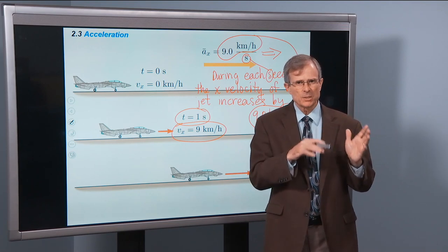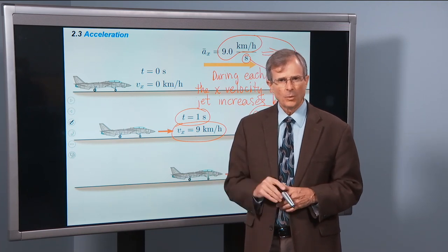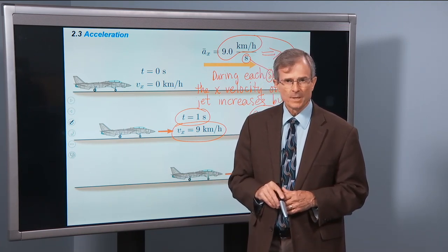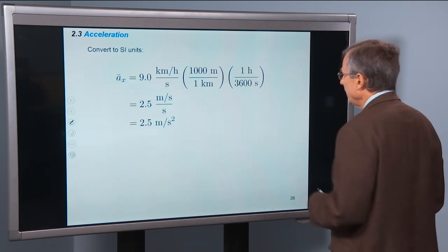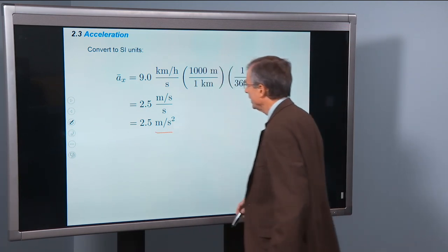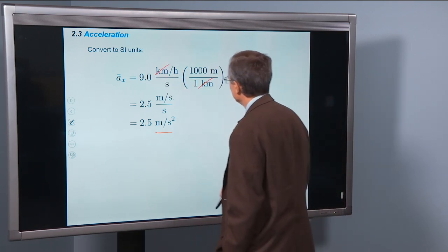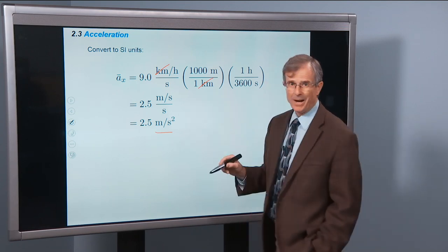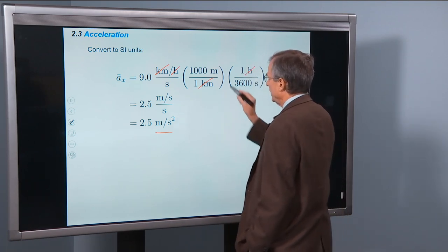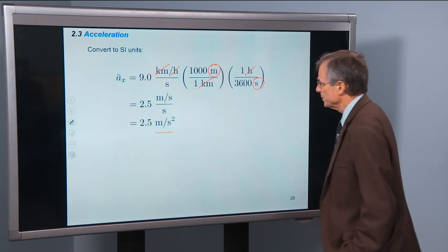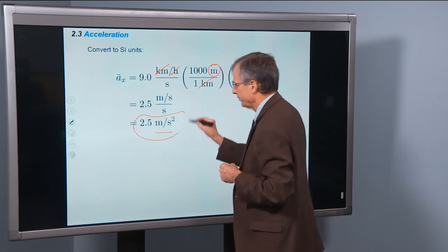If this jet is moving along at a constant velocity, its acceleration will be 0. And here's the conversion to the usual units of m/s²: multiply by 1000 m per kilometer and divide by 3600 seconds per hour. That gives 2.5 m/s².